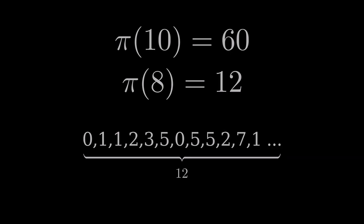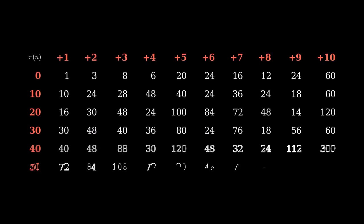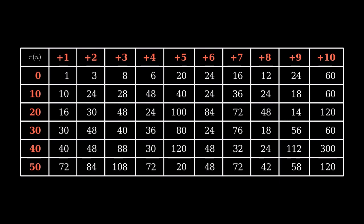We could do some more by hand, or we could write a super janky python script and have the computer do it for us. Here are the Pisano periods of all the numbers from 1 to 60. We've got some patterns here.